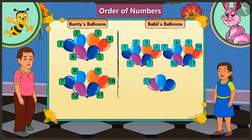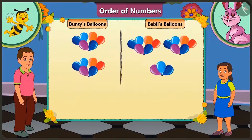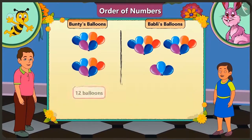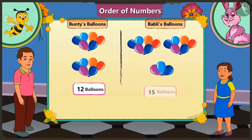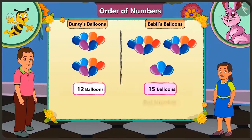Oh yes, you are right. Honey, can you tell me how many balloons Bunty and Bubbly have with them? Bunty has 1, 2, 3, 4, 5, 6, 7, 8, 9, 10, 11, and 12 balloons.